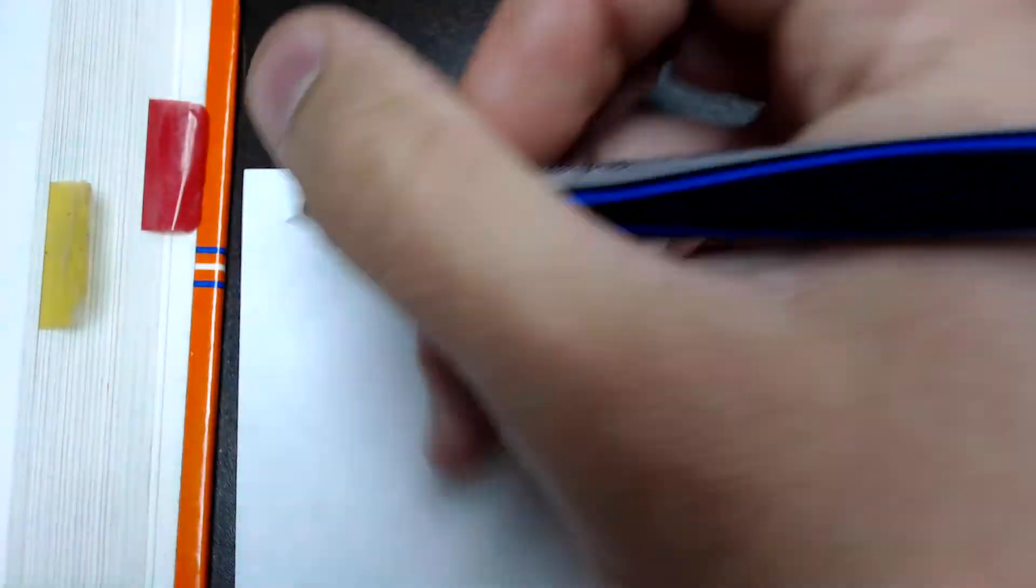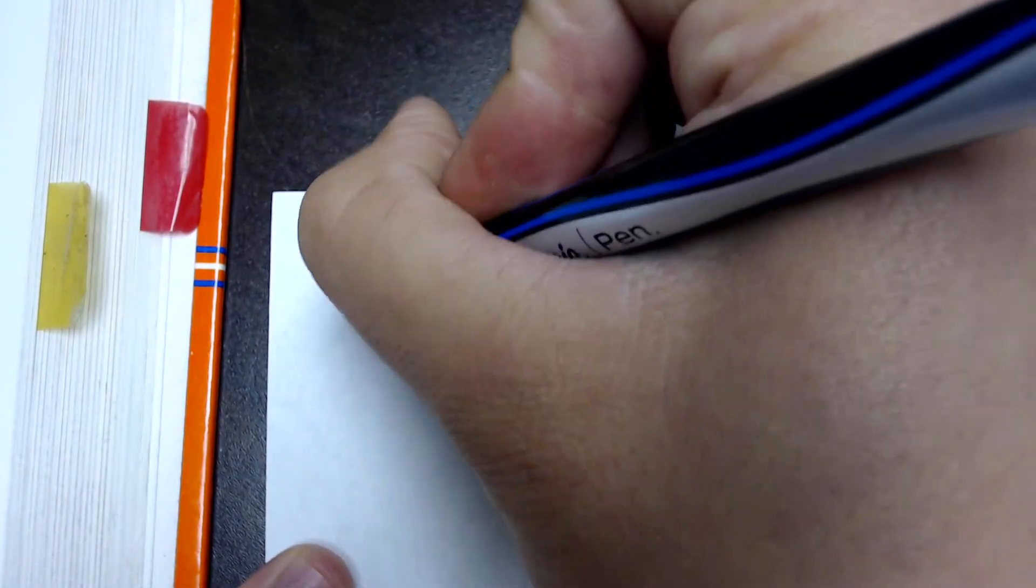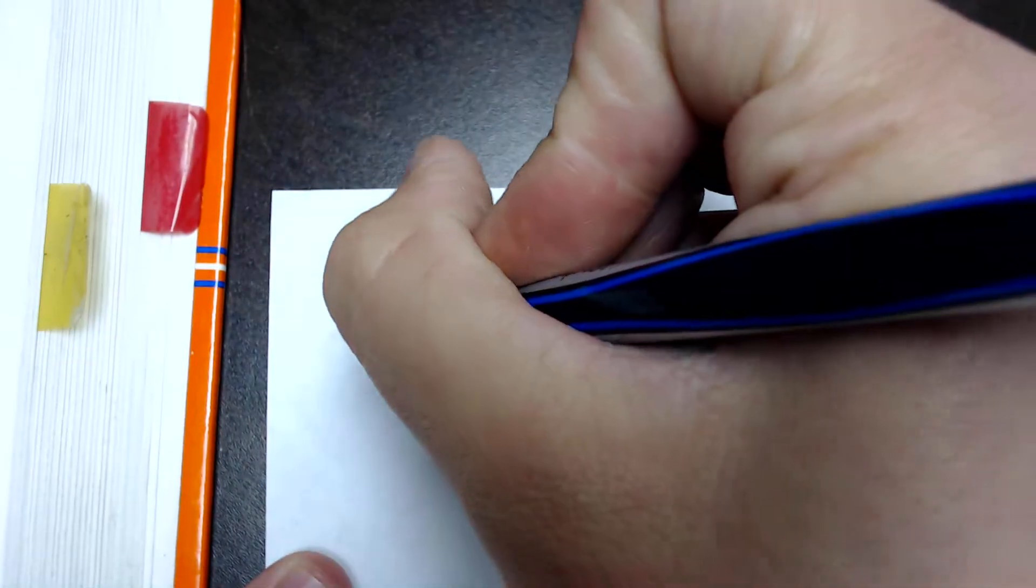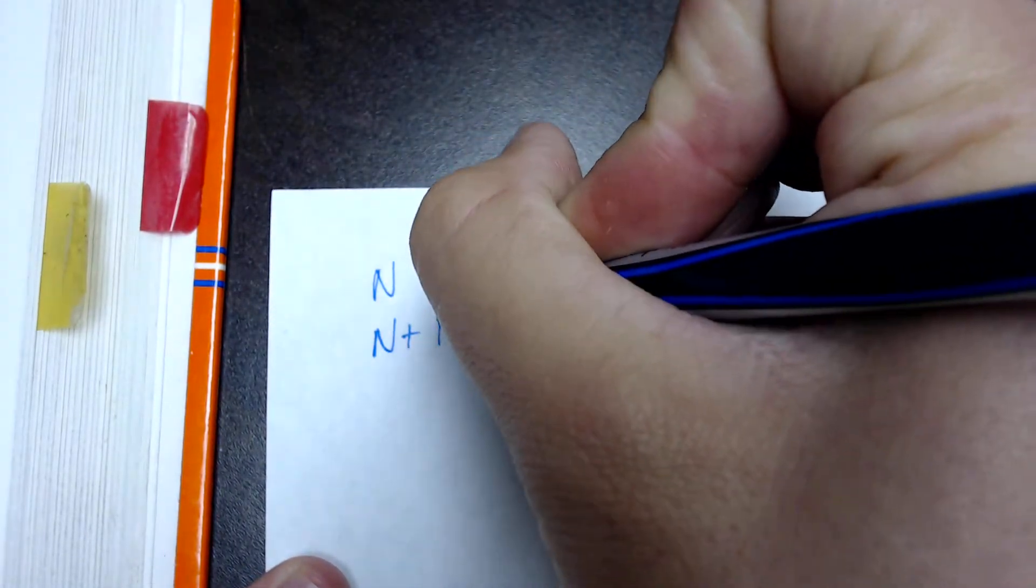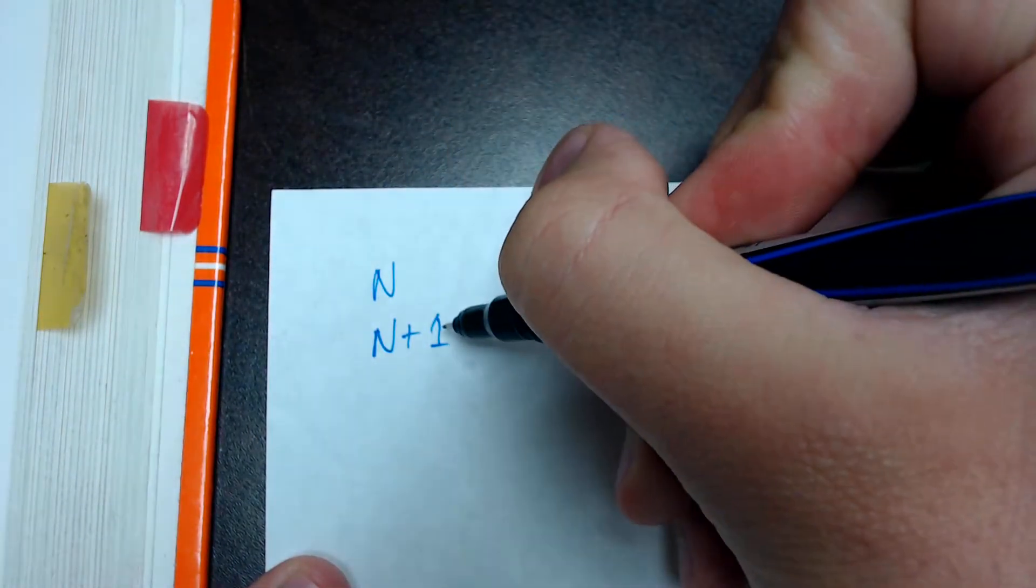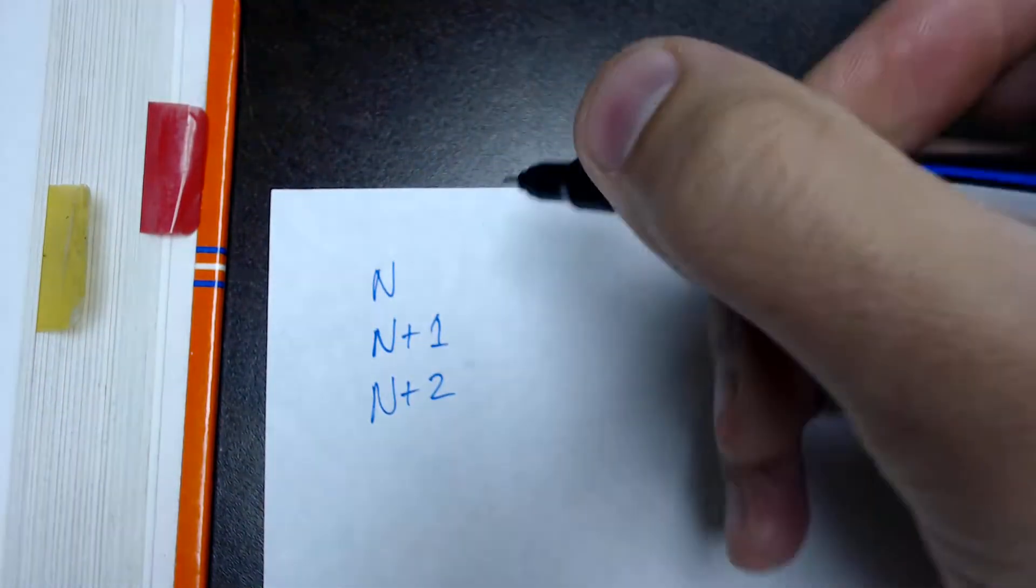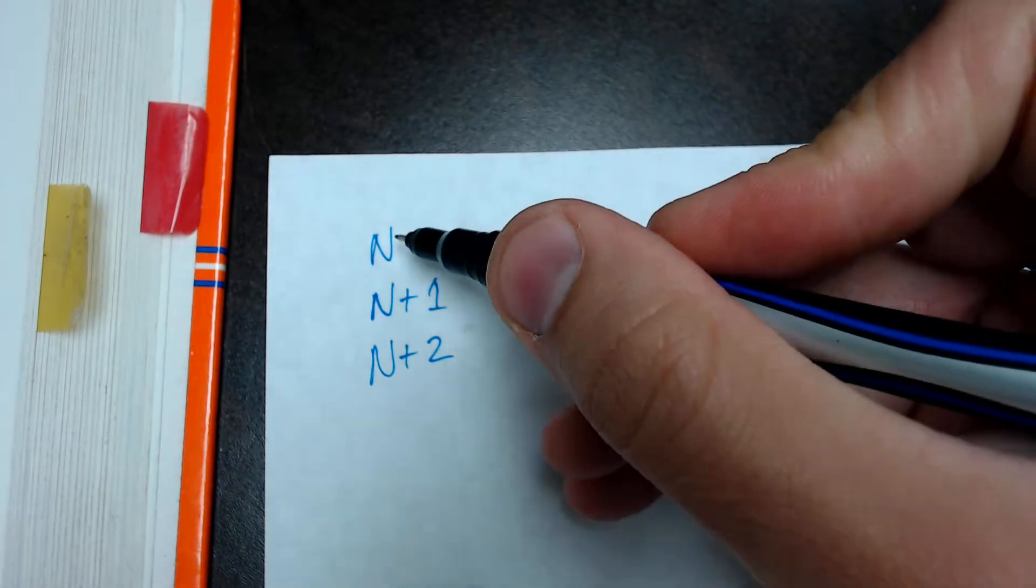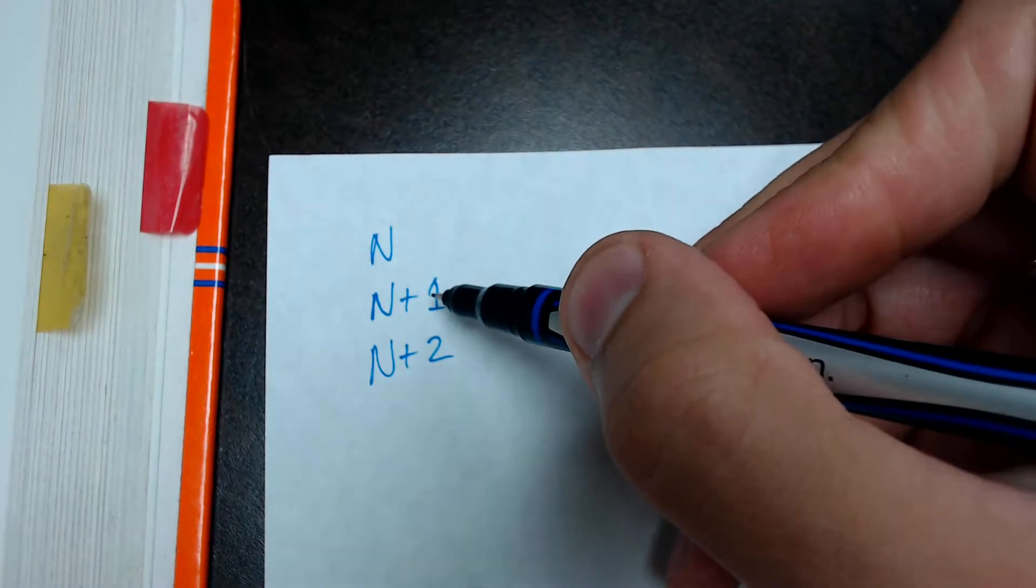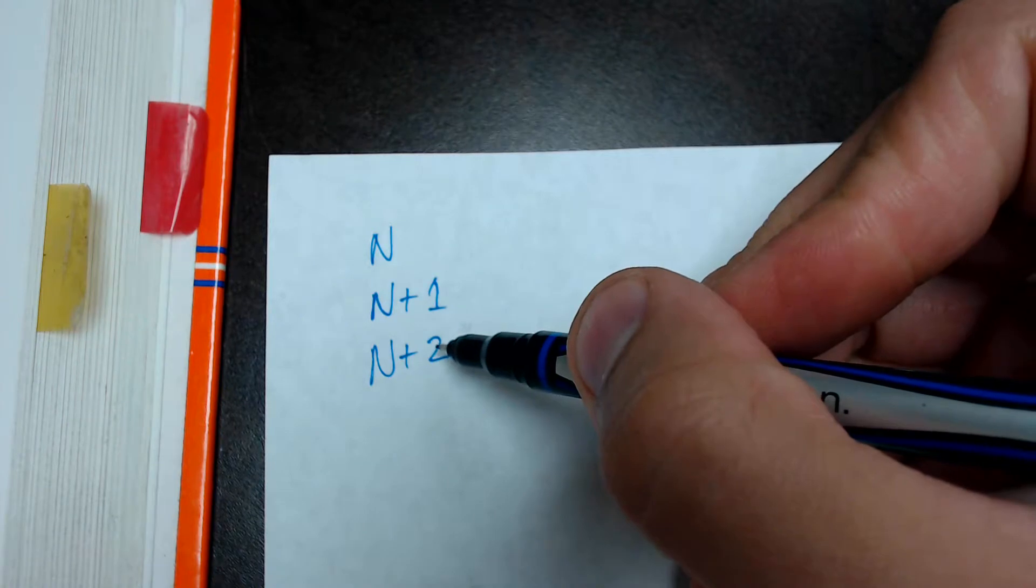If I have to do three consecutive integers, the first number is going to be n, right? Second number, n plus 1, because 1 plus 1 is 2. And the third number, n plus 2, and so on and so forth. Because if n is 1, then the next number has to be 2. 1 plus 1 is 2, 1 plus 2 is 3, so 1, 2, 3. It works.